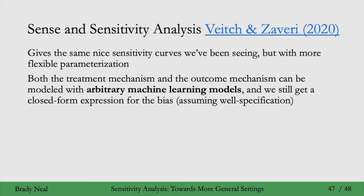It's really cool because even with really complex machine learning models, they can still get a closed-form expression for the bias, assuming the models are well specified. This is something you couldn't even get in the setting that Rosenbaum and Rubin 1983 and Imbens 2003 considered, where the treatment was a sigmoid function of a linear combination of W and U and Y was a noisy linear function of W and U. But in this paper, they're able to get a closed-form expression for the bias when the functional forms are whatever — even crazy machine learning models.